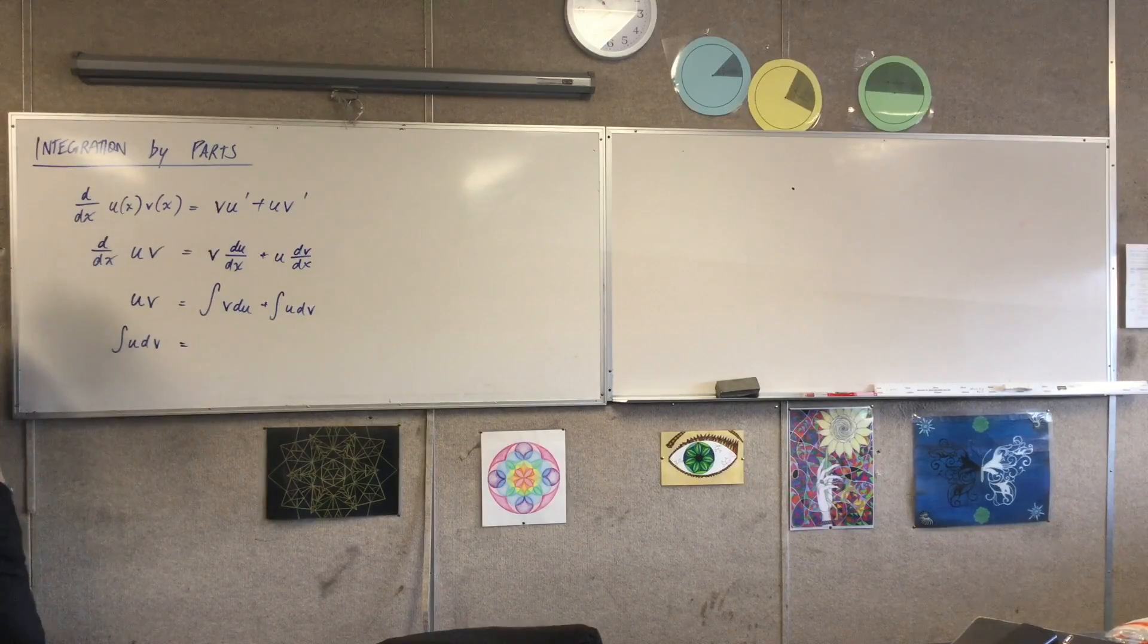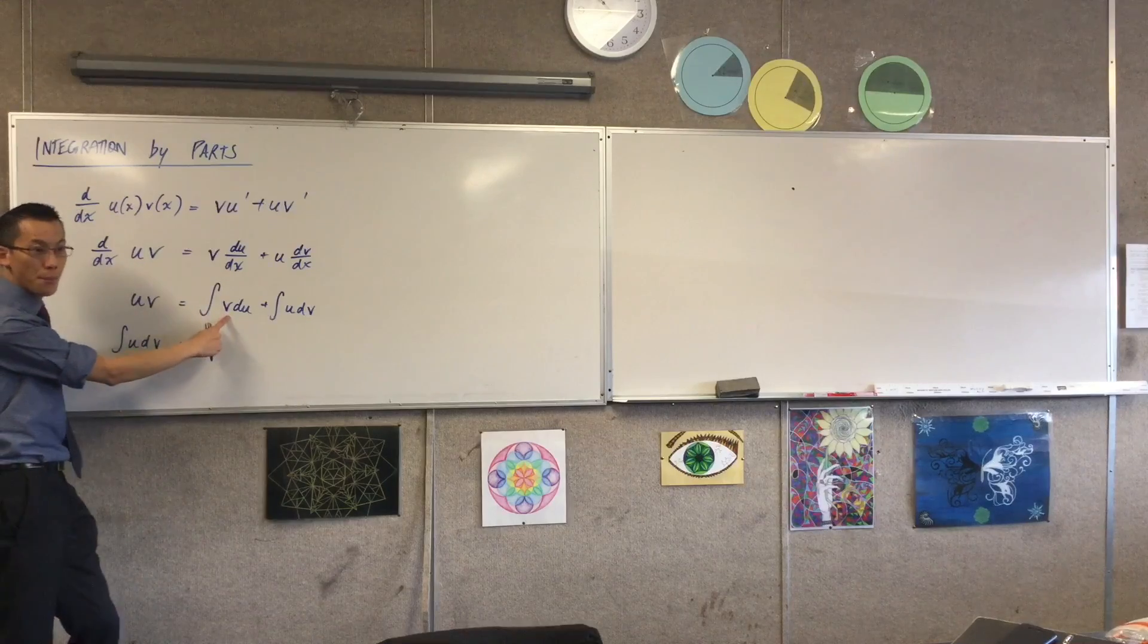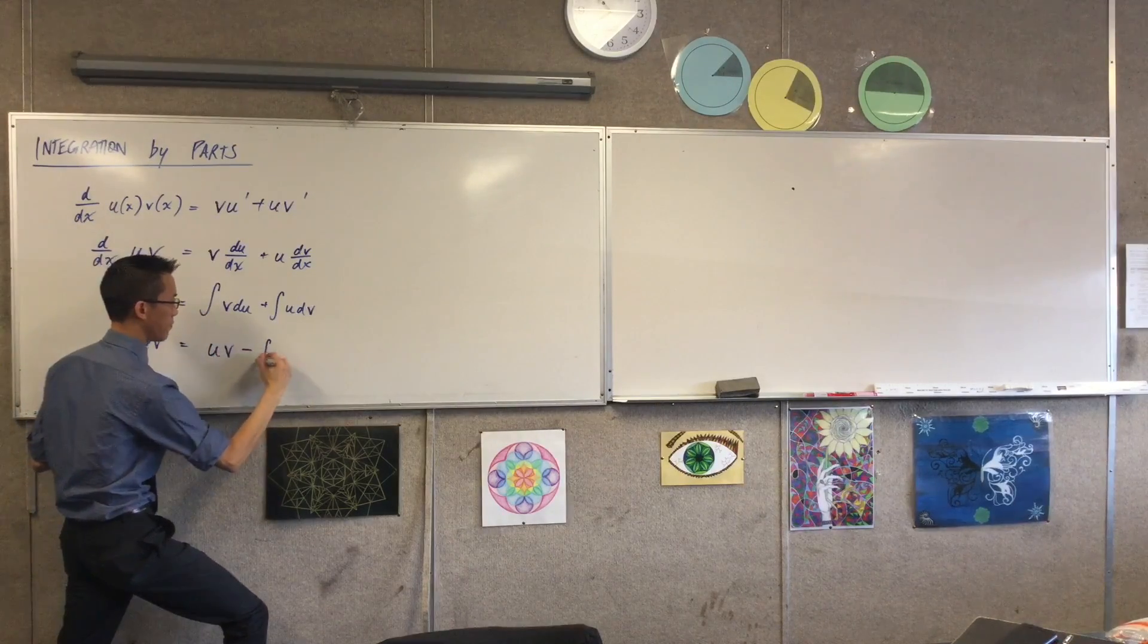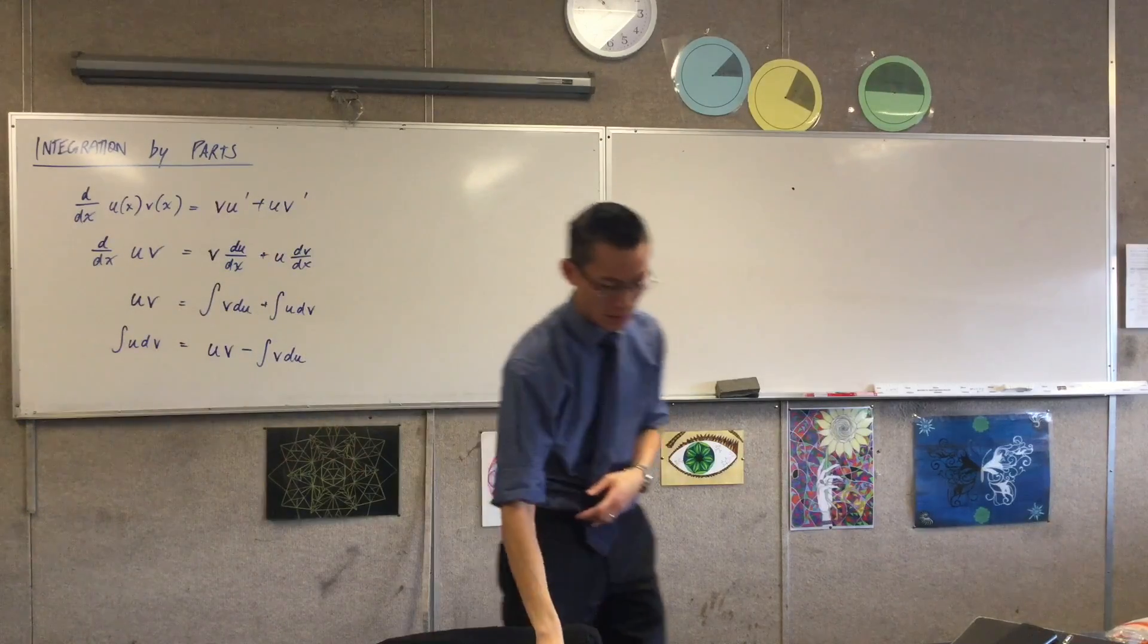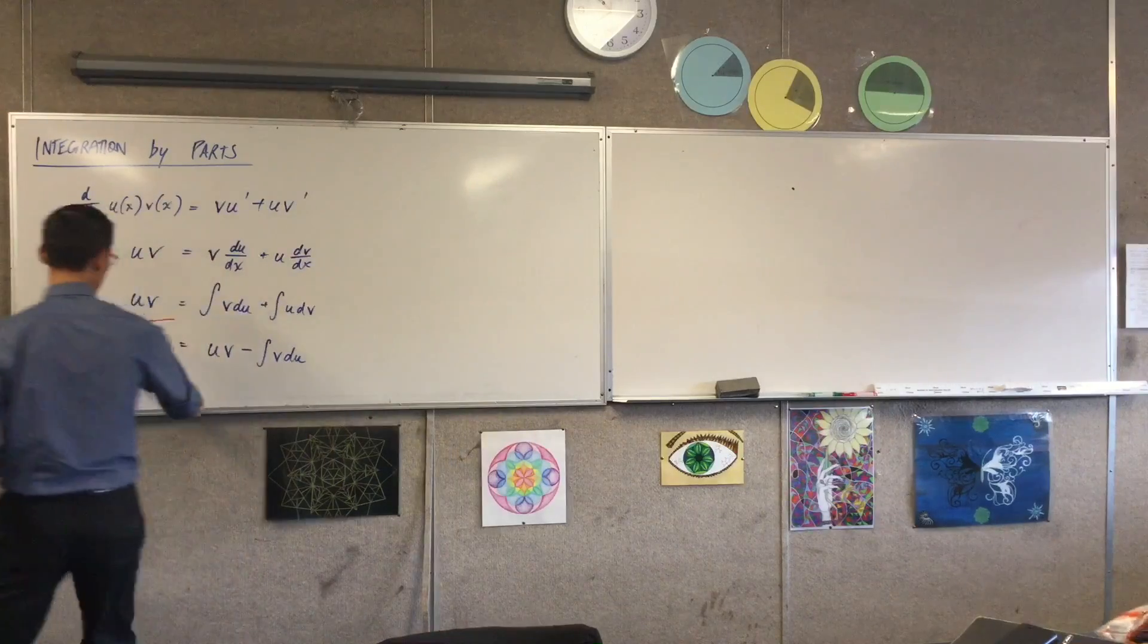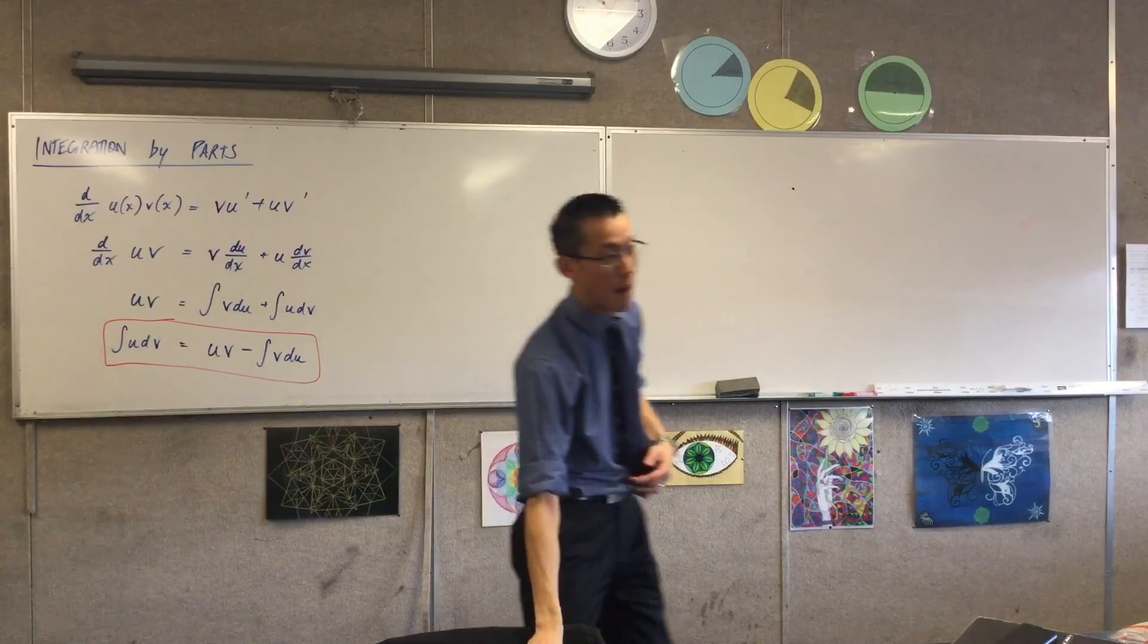So what is this going to be equal to? Well, all I need to do is subtract that guy from both sides. Do you agree? So what I actually have would be this. Do you see it? Okay, take that. Put a big box around it. This is the definition of integration by parts.